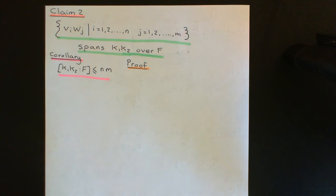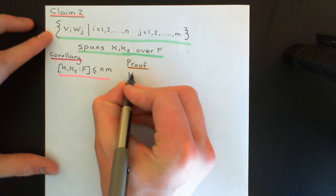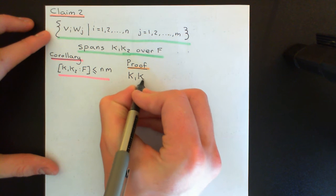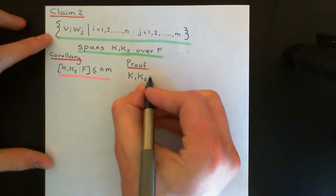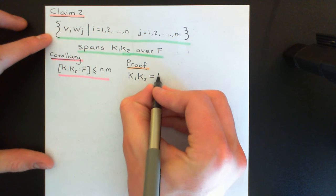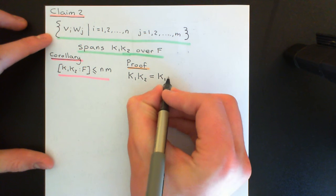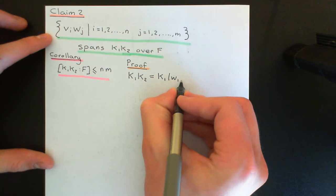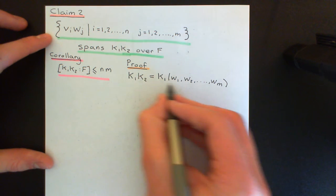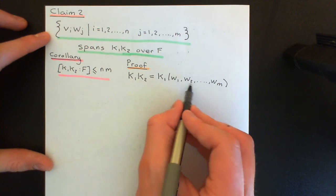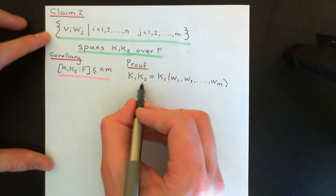So, proof of Claim 2. Firstly, to construct the composite of k1 and k2, we've proven that this is equal to the field extension of F generated by all of the basis vectors v1, v2, all the way up to vn, w1, w2, all the way up to wm. What I'm going to find incredibly useful for proving this is the statement that the composite of k1 and k2 is equal to the field extension of k1 generated by the basis vectors of k2: w1, w2, all the way up to wm. This is going to be a really important statement. I'll first argue that this is true, and then use it to prove the claim.